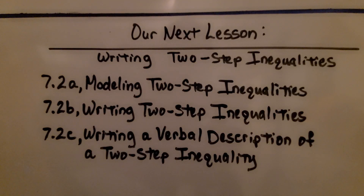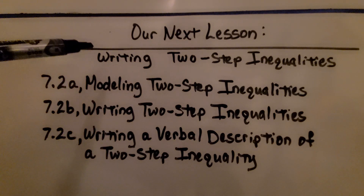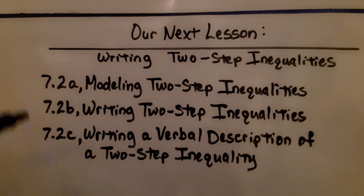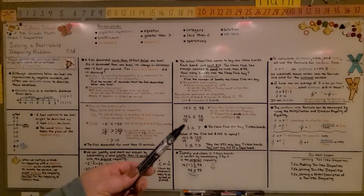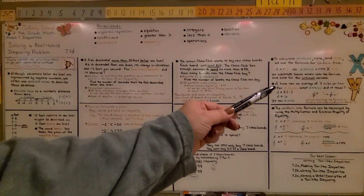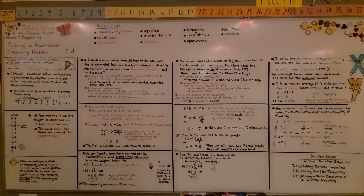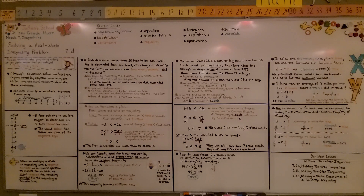We're finished with Lesson 7.1 and moving on to 7.2, where we'll be writing two-step inequalities and modeling them to fully understand them. Also remember: the d = rt formula is called uniform rate, not the distance formula — the distance formula is completely different and we'll get into that deeper in algebra. I hope you join me, and have a great day!